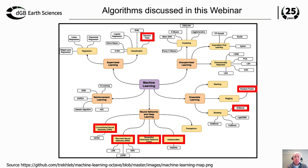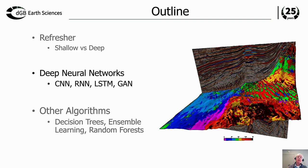Today we will be talking about convolutional neural networks, recurrent neural networks, generative adversarial neural networks, and auto-encoders as part of deep learning. Then we will talk about other algorithms, starting with decision trees, and then moving into random forests and boosting algorithms.